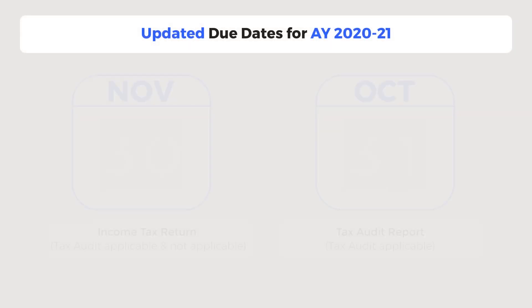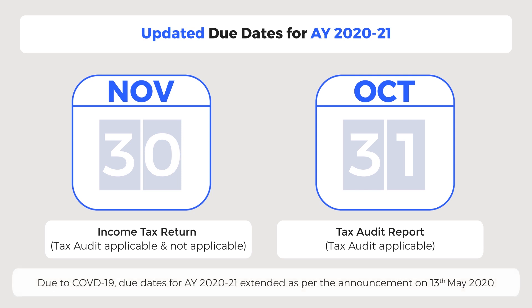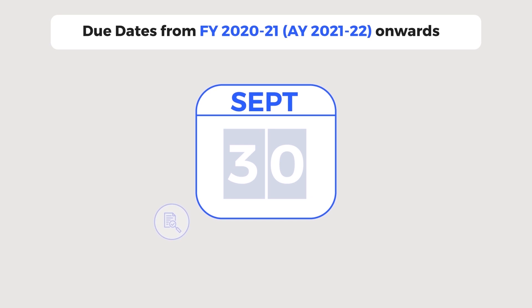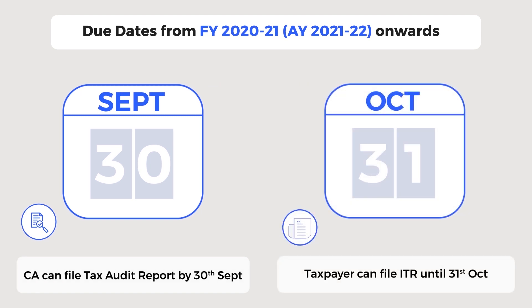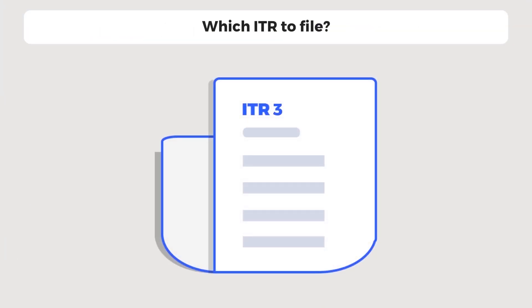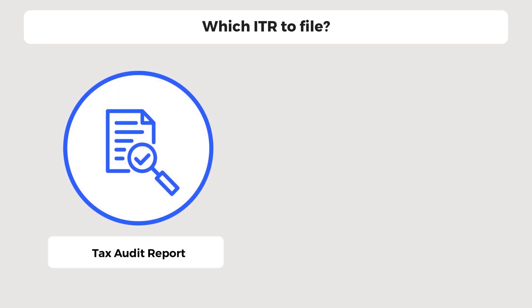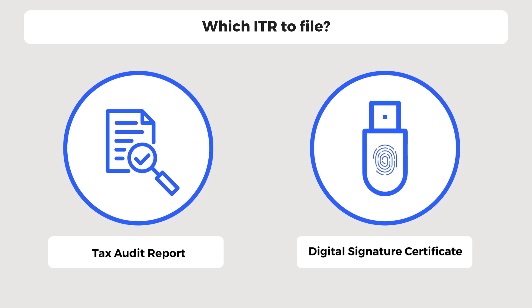Due to the COVID-19 situation, the Finance Ministry extended the due dates for assessment year 2021. From financial year 2021 onwards, when tax audit is applicable, the due date to file the tax audit report by the CA is 30th September, but the taxpayer can file ITR until 31st October. Taxpayers with business income are required to file ITR-3. You may also be required to submit an audit report if tax audit is applicable, in which case filing ITR with a digital signature certificate is mandatory.